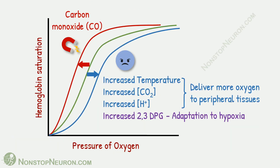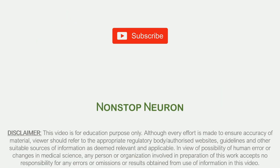So these were the factors that shift the oxygen hemoglobin dissociation curve. You can watch other videos on respiratory physiology from the channel page. I have mentioned some links in the description. Also follow me on other social media platforms. If you are new here, subscribe to be a part of the Non-Stop Neuron family. Thanks for watching. See you in the next video.